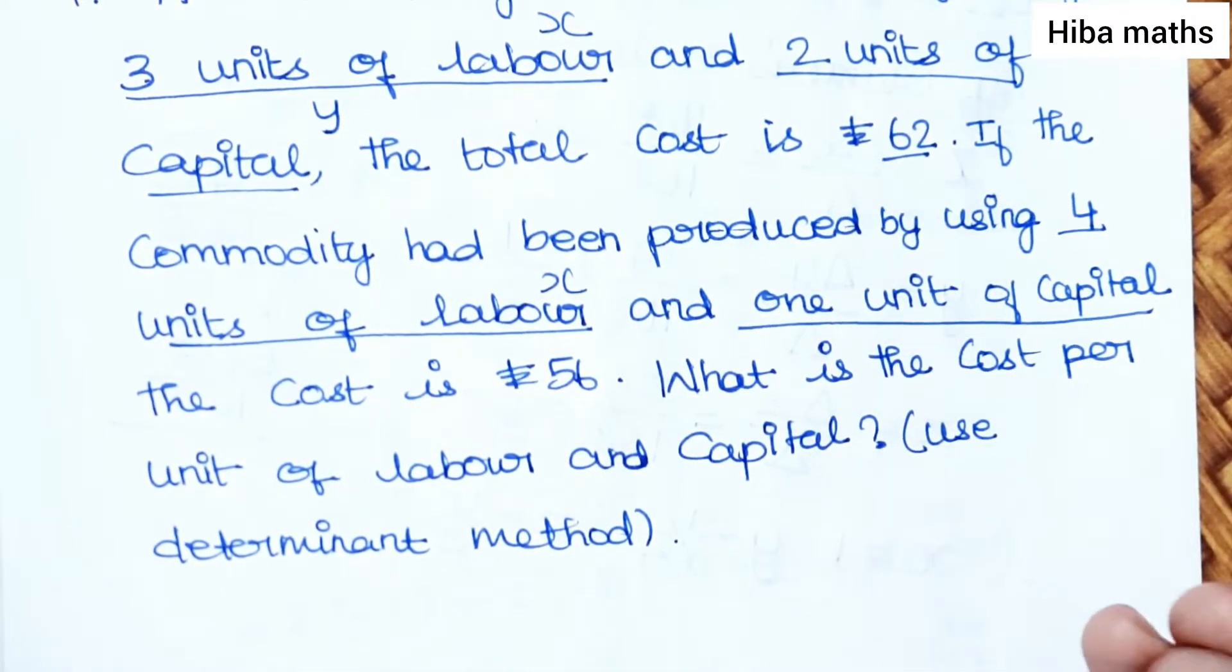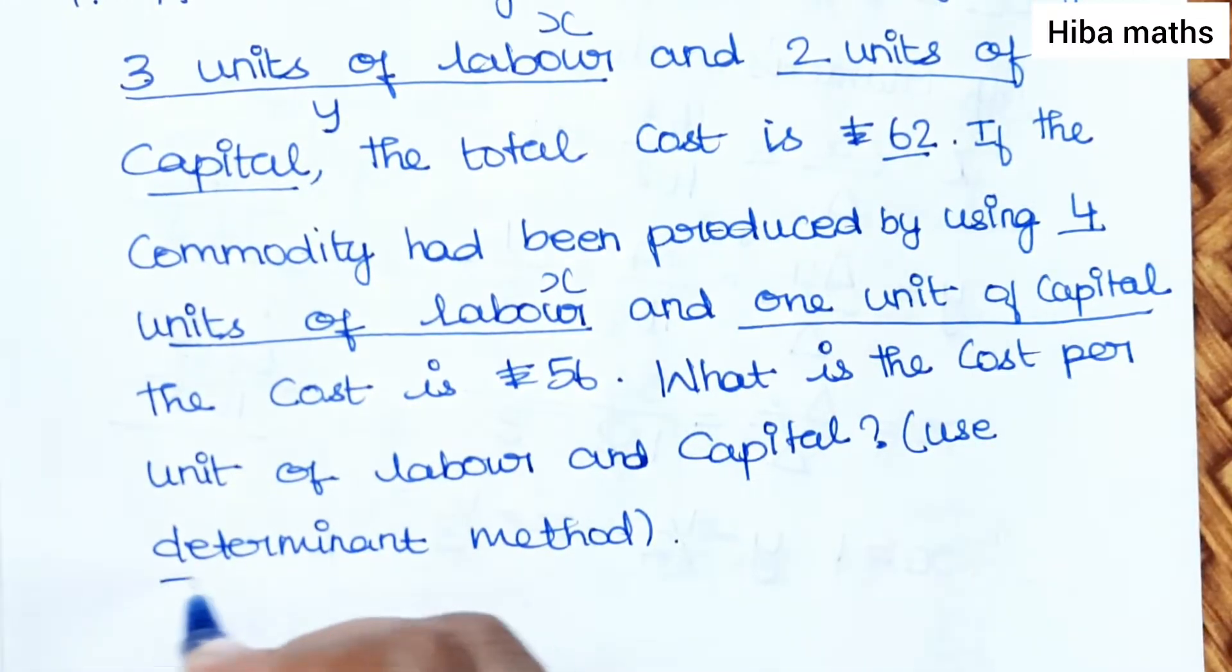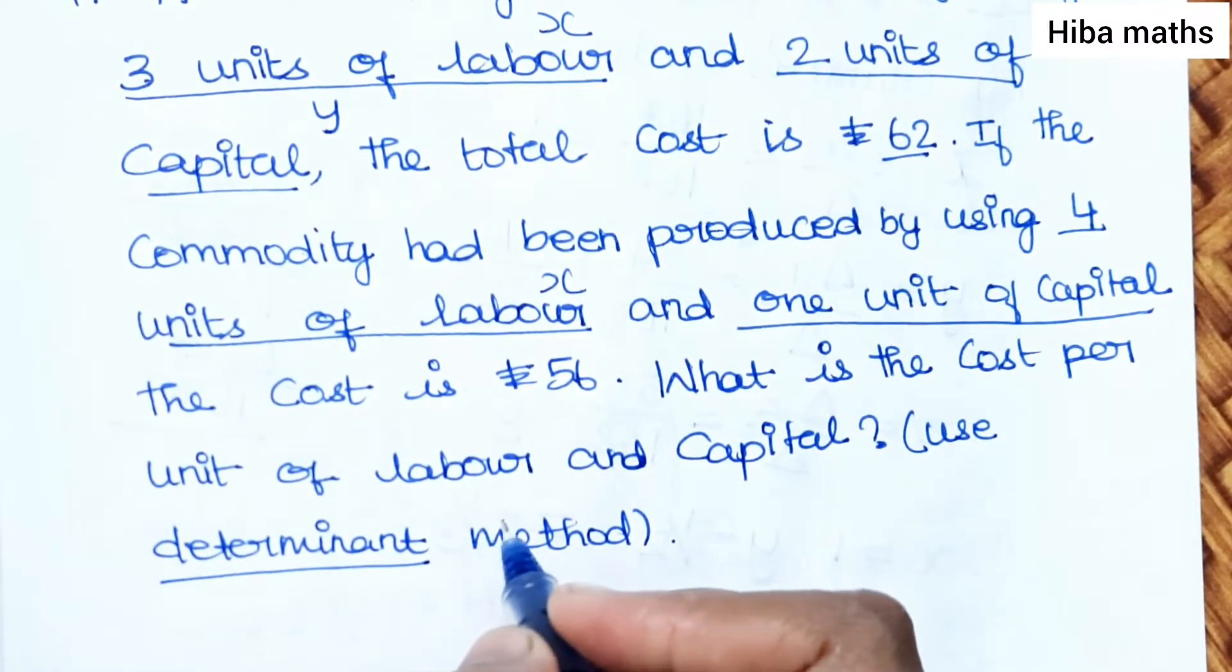We'll find x and y using the determinant method. The determinant method is Cramer's rule.